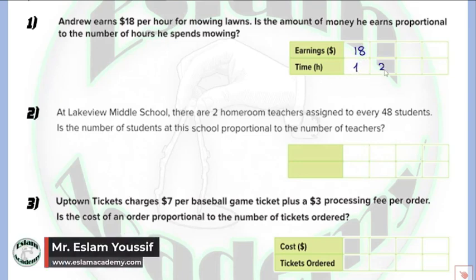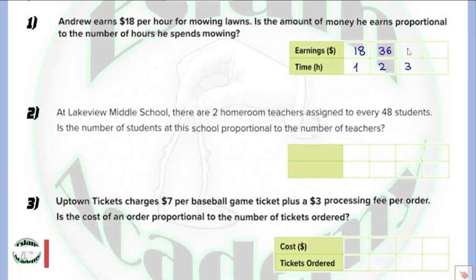If he works for two hours, he will earn $36. Three hours will equal $54, and four hours will equal $72. This is because 1 multiplied by 18 equals 18 — you just multiply the number of hours by 18 to find how much he will earn.